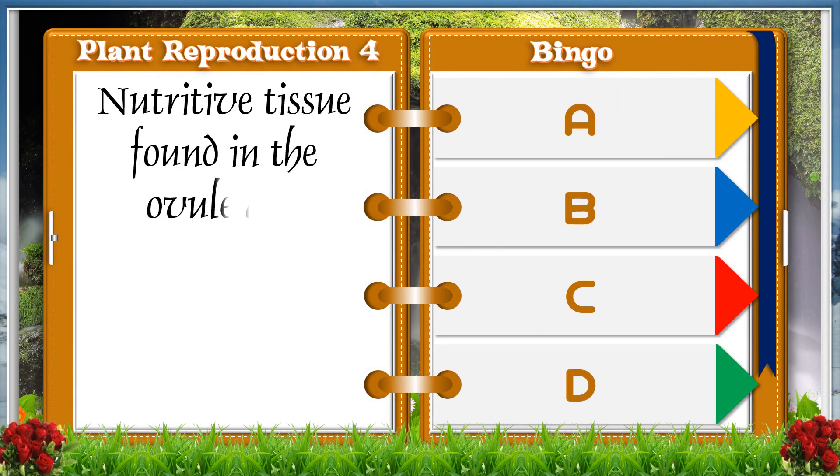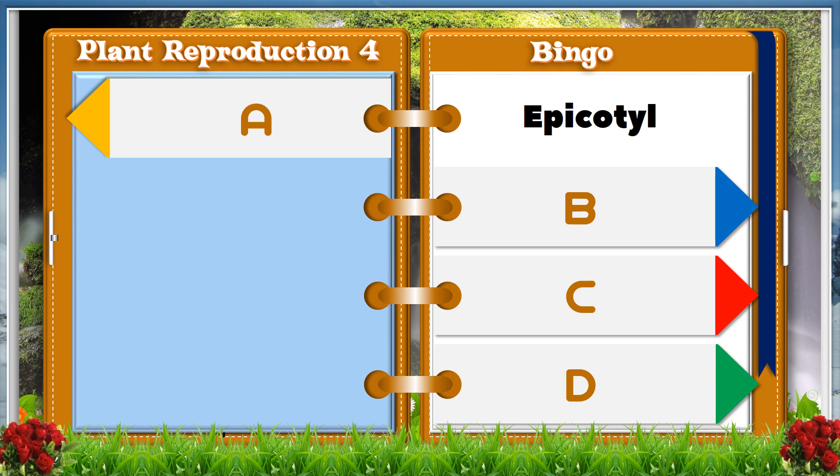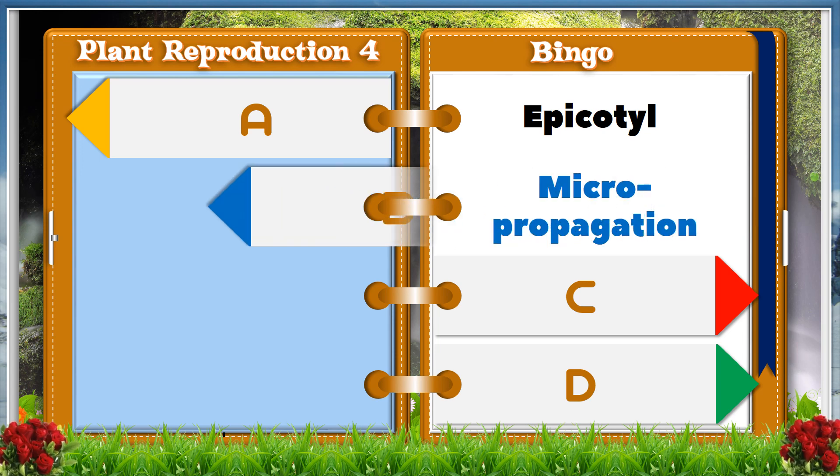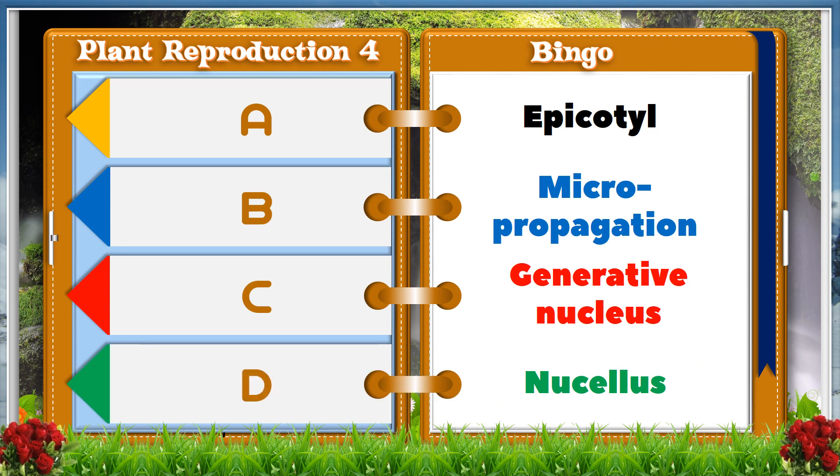Nutritive tissue found in the ovule and nourishes the embryo sac during its development. A. Epicotyl. B. Micro-propagation. C. Generative nucleus. D. Nucellus. And the answer is D, Nucellus.